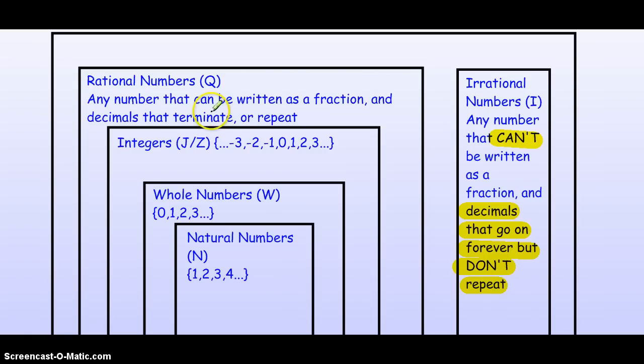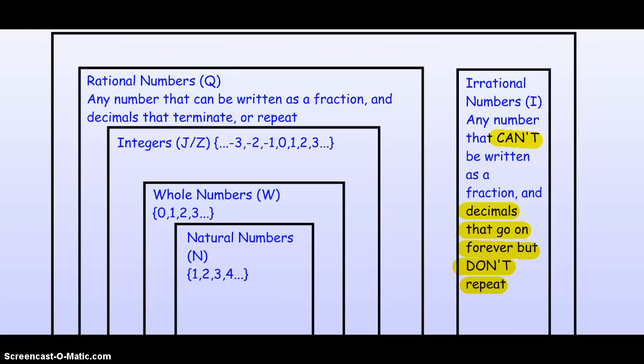So, the difference is, rationals stop or terminate, or if they go on forever, they have to repeat. These decimals go on forever and ever, but there is no repeating pattern.